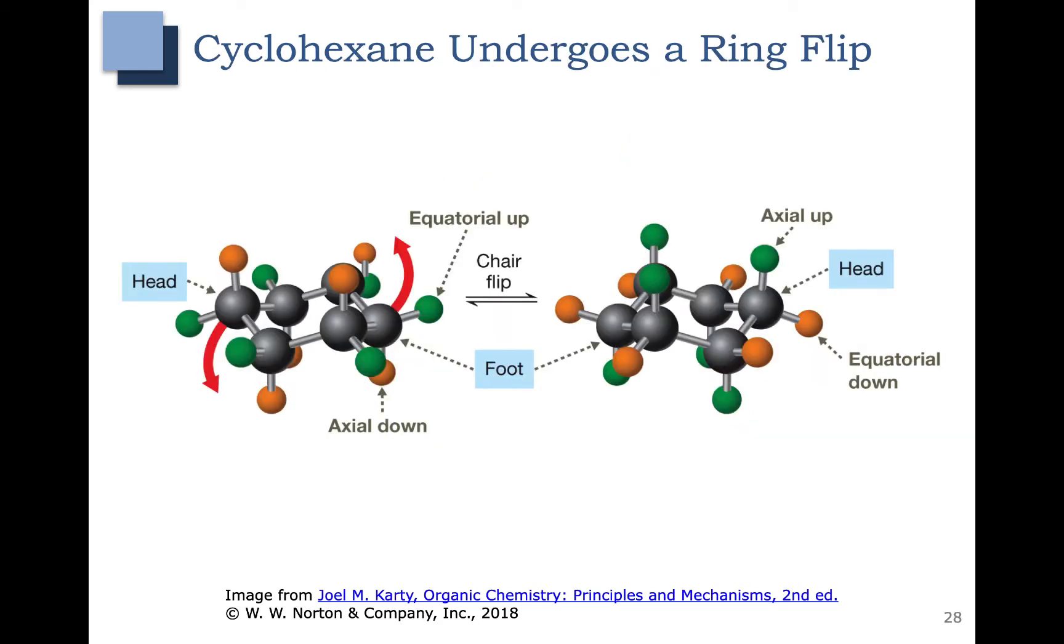Now let's look at the ring flip that cyclohexane undergoes. This is the ring flip shown here. It's also referred to as a chair flip. In the chair flip, all of the axial hydrogens shown in orange become equatorial hydrogens, and all the green hydrogens that are equatorial become axial hydrogens.